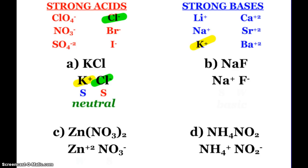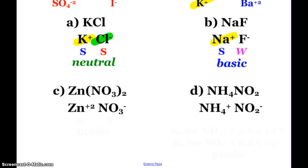Next up: sodium fluoride. Sodium comes from the strong base sodium hydroxide. Fluoride is not one of my strongs, so it's a weak. When I have a strong base ion and a weak acid anion, I know my salt solution will be basic.